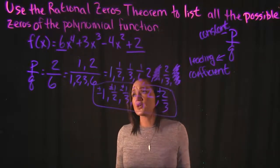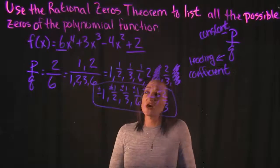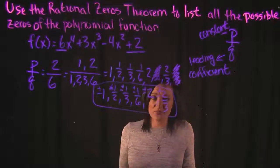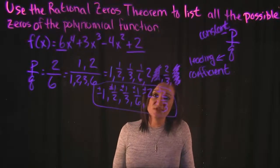So just take P over Q, find all the factors of those, and then write them in all the variations that they can be written. That's it for this video.